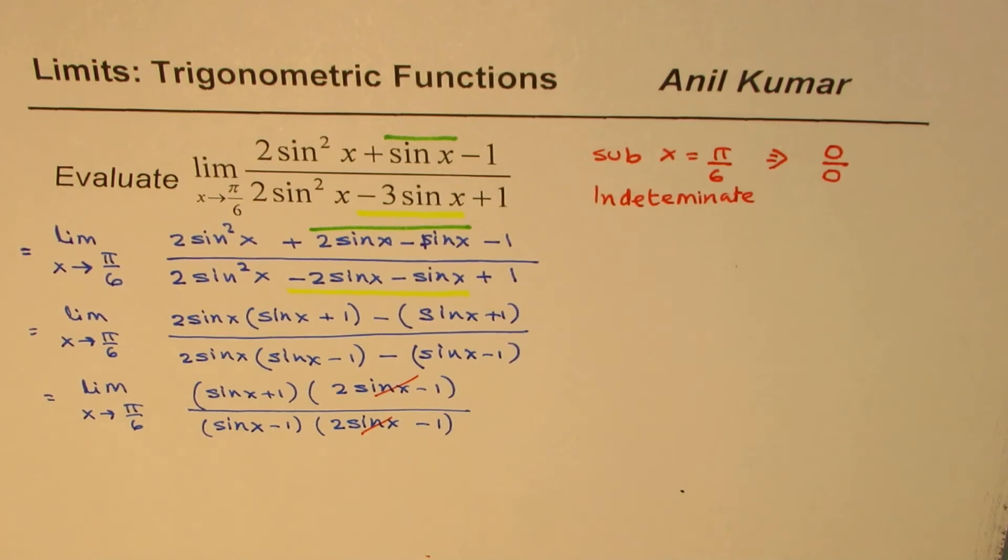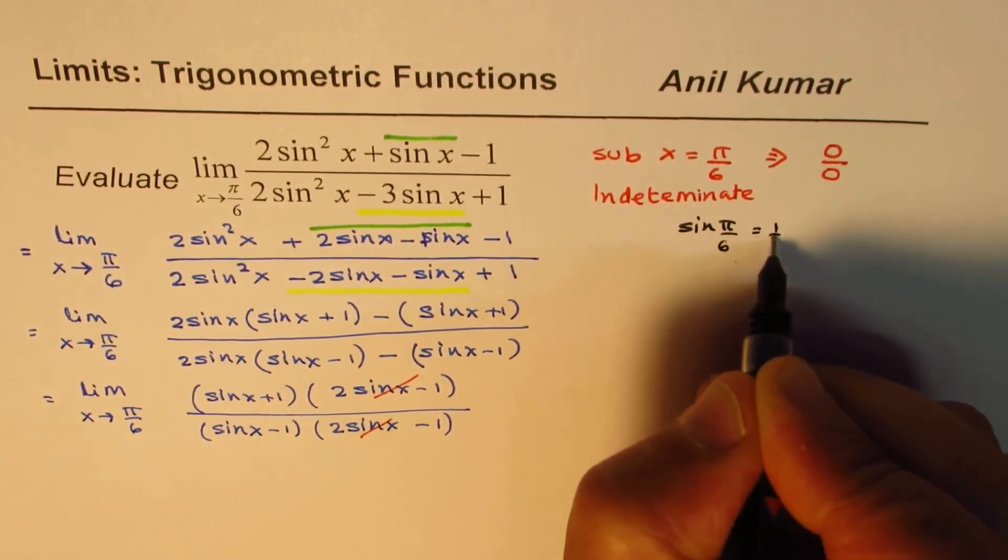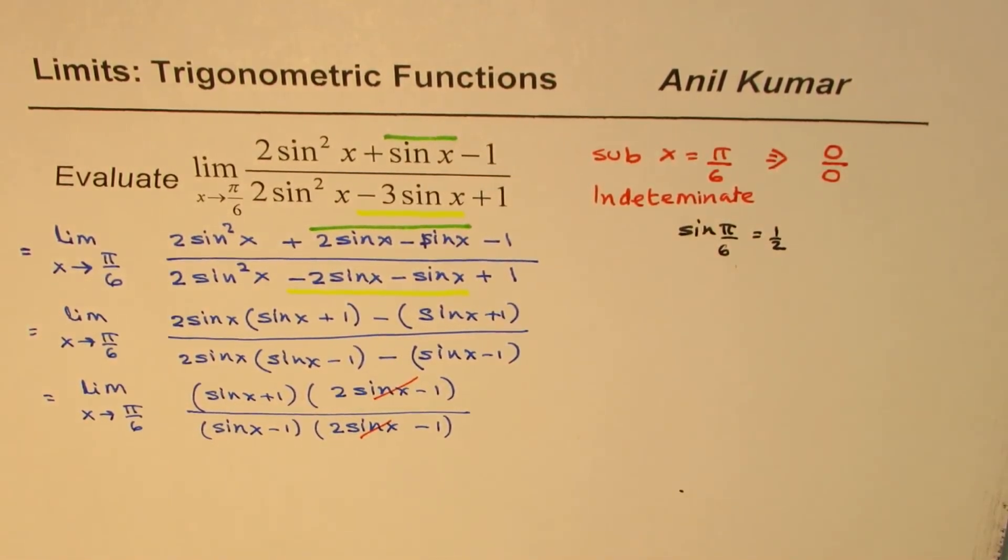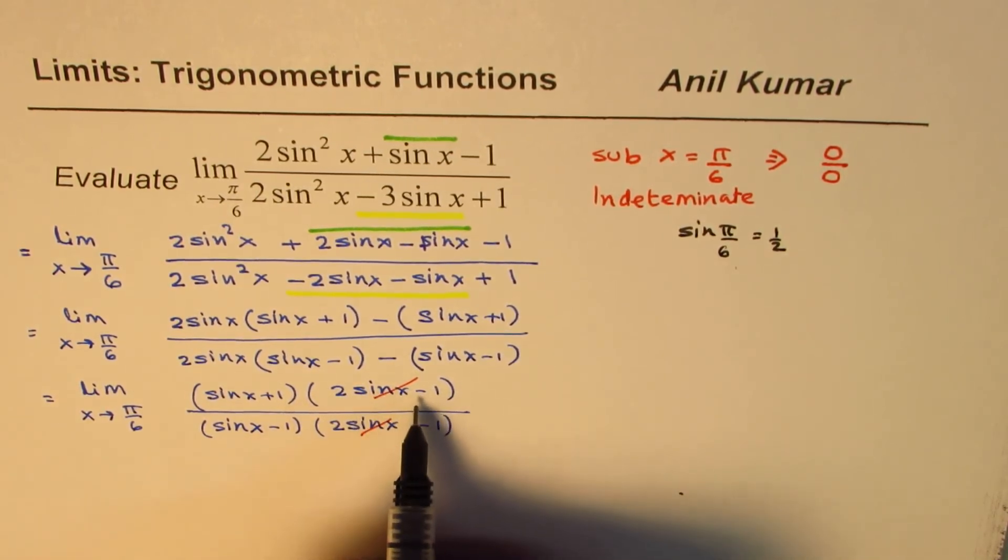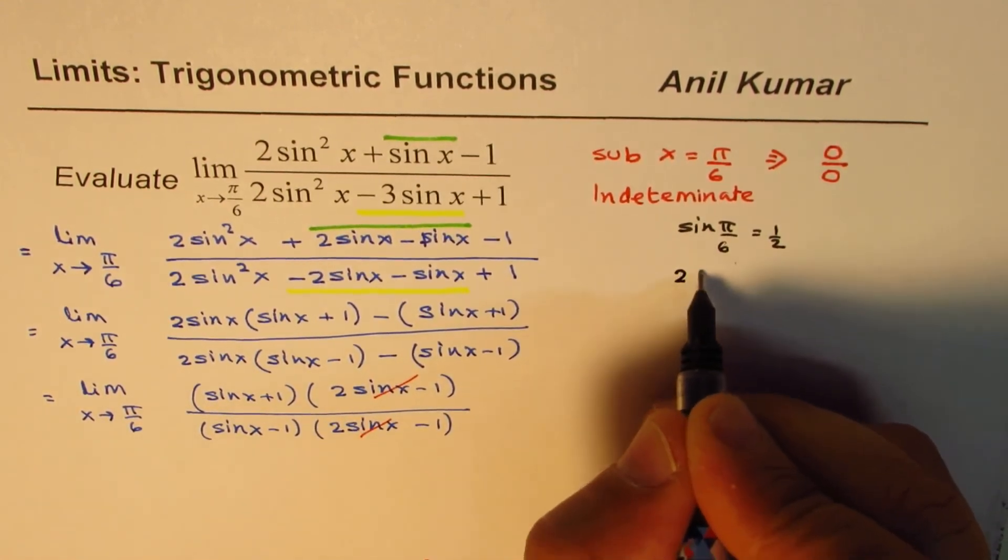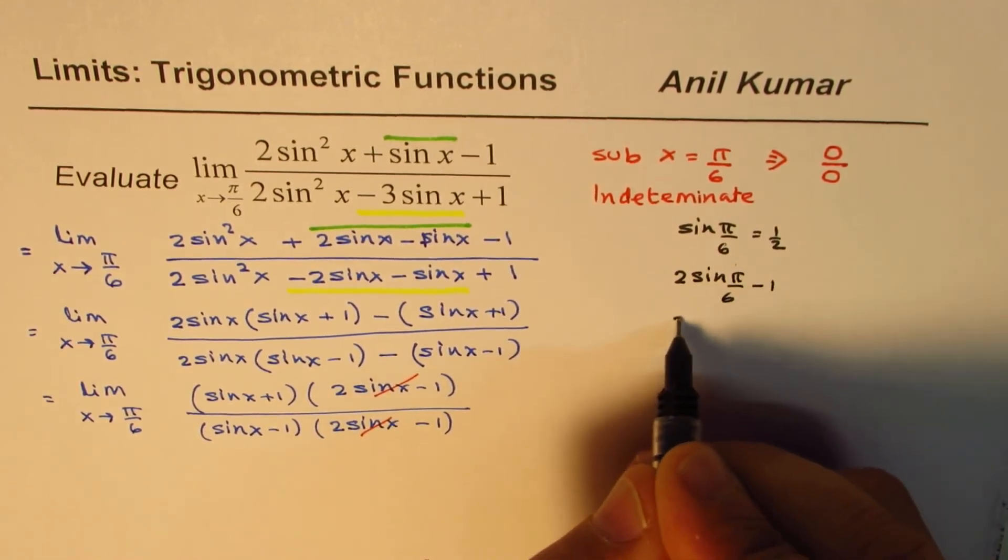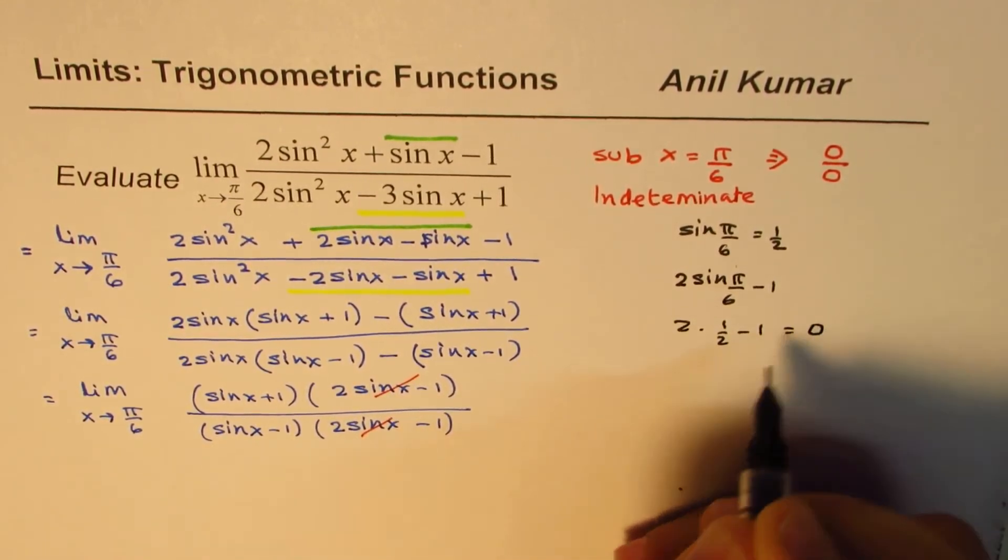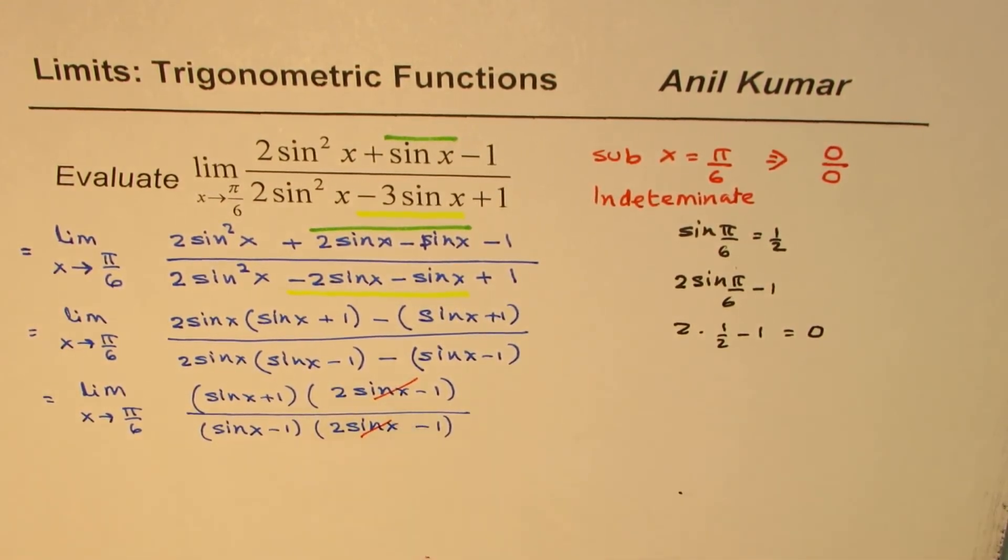As you know, sin(π/6) is how much? Sin(π/6) is half. So if you substitute half here, half times 2 is 1, 1 minus 1 is 0. So 0 divided by 0. So that factor, so that was making 2sin(π/6) minus 1 as 2 times half minus 1 as 0. Do you see that? So that was the zeros of both numerator and denominator which got cancelled off with this factor.